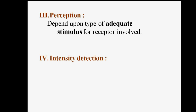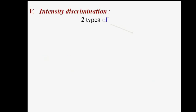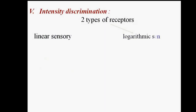Intensity detection occurs by changes in the frequency of action potentials and the number of receptors activated. For intensity discrimination, there are two types of receptors: linear sensory receptors and logarithmic sensory receptors.